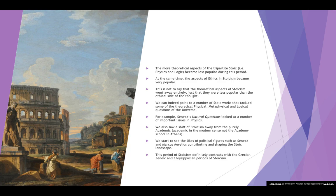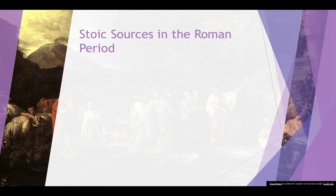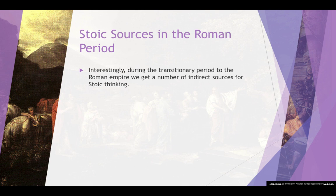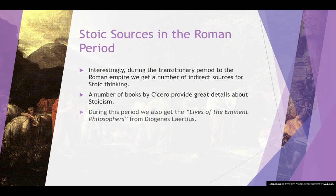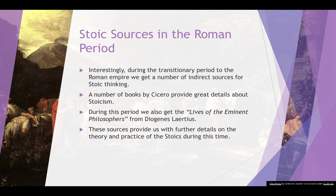When it comes to Stoic sources in the Roman period, during the transitionary period to the Roman Empire we get a number of indirect sources for Stoic thinking. Books by Cicero can provide great details about what the Stoics believed. We also get works like the Lives of Eminent Philosophers by Diogenes Laërtius, and these sources provide us with further details on the theory and practice of the Stoics at the time.